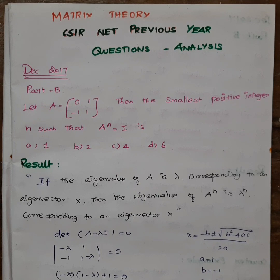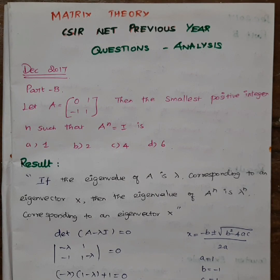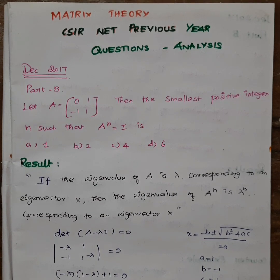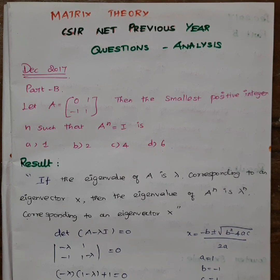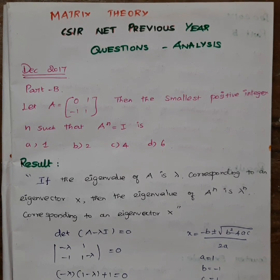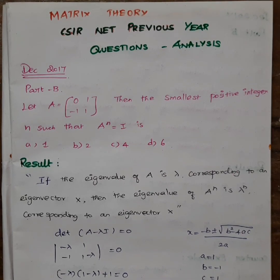First, let's look at the idempotent matrix. Idempotent means A squared equals A — there is no such condition here. Second, let's look at the involutary matrix. Involutary matrix means A squared equals I. Third is nilpotent: A^k equals the zero matrix for some k. In the third category, we have no match either.